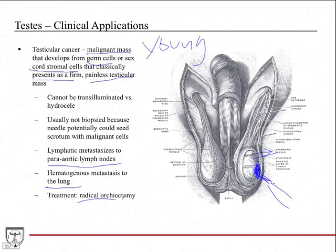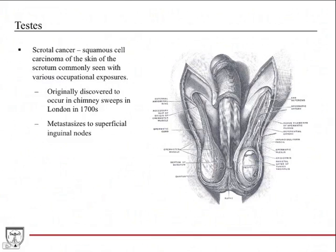Treatment is radical orchiectomy — complete removal of the testicle — leaving no testicular tissue behind to eliminate any risk of recurrence. If caught early enough, this is typically a very successful operation with a very good prognosis.